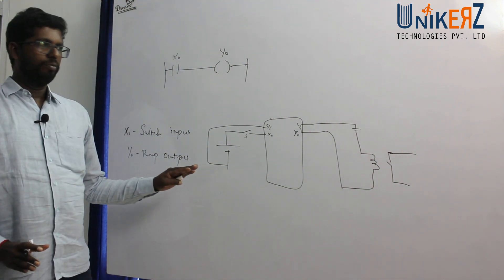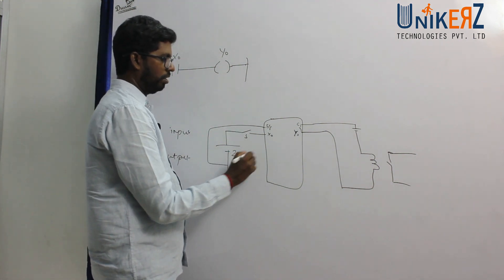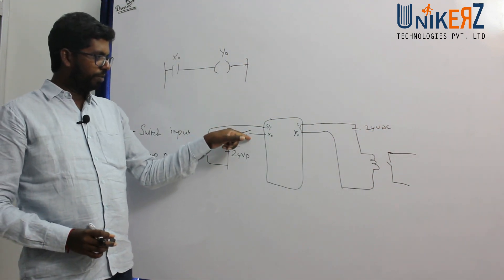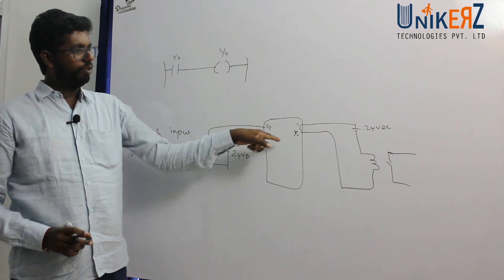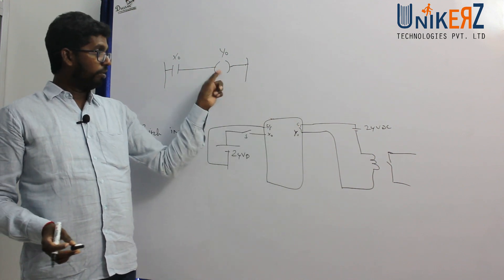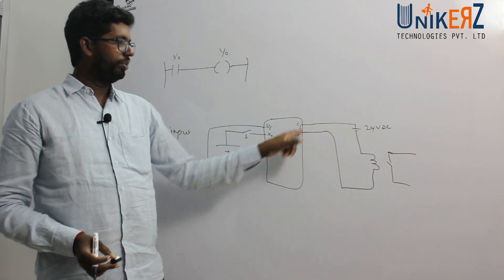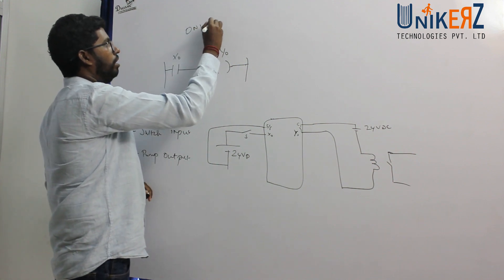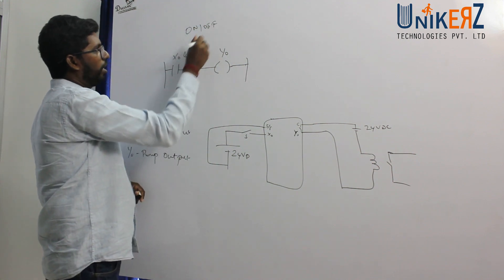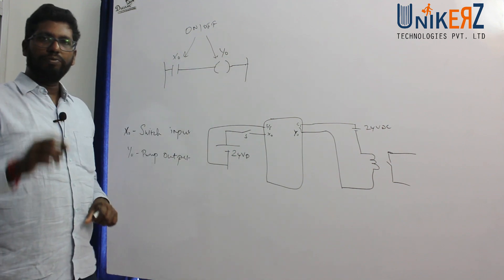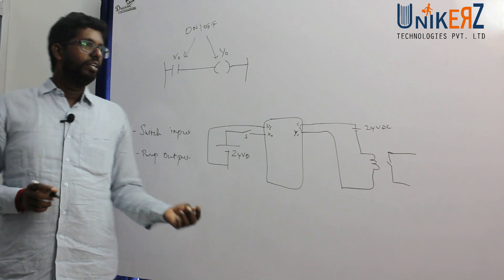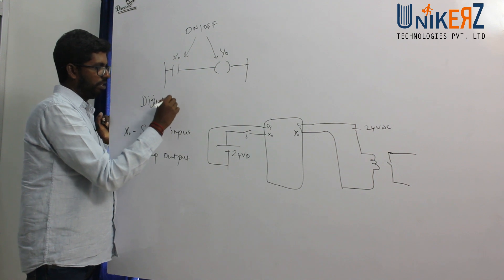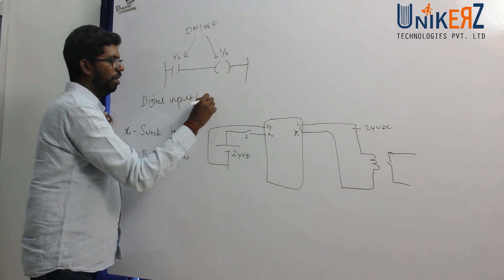This switch has a 24V DC source. If we press this switch — is it input or output? This is logic. The switch is 24V: on or off. Either input or output, on or off. Status is on or off; command means digital. Input. Output.